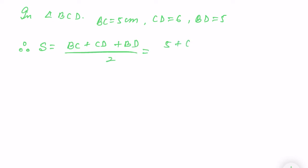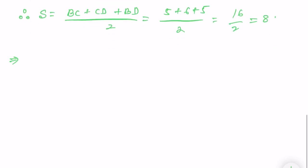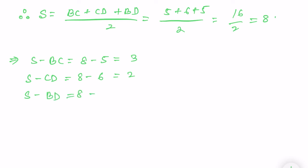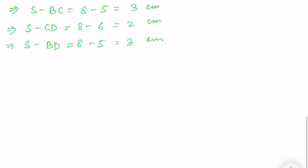So S minus BC equals 8 minus 5 equals 3 cm. S minus CD equals 8 minus 6 equals 2 cm. S minus BD equals 8 minus 5 equals 3 cm. These are all in centimeters.